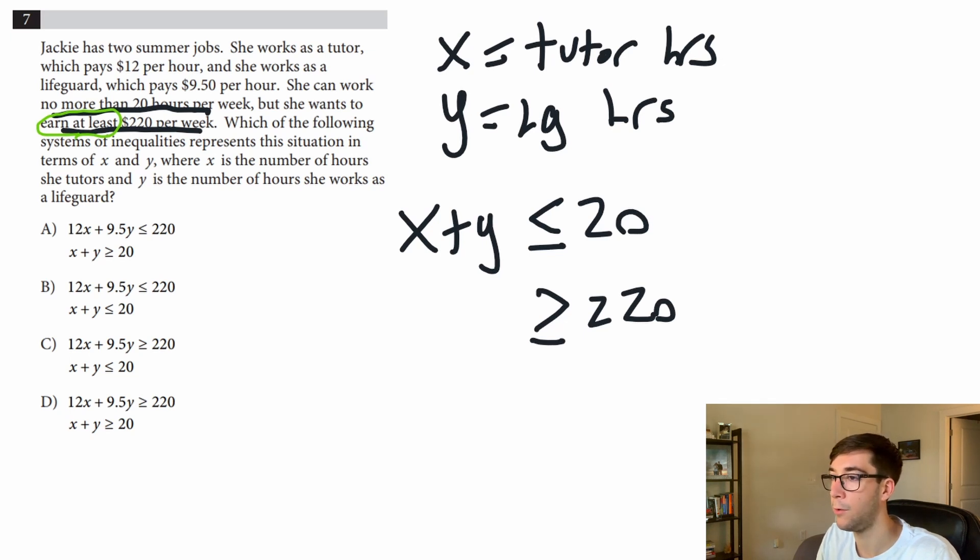The amount you make is equal to the hours you work times the rate. So tutoring, she makes $12 an hour, so it's going to be 12x plus, with lifeguarding she makes $9.50, 9.5y. So the money she makes with tutoring and the money she makes with lifeguarding is going to be equal to or more than $220. So our answer here is going to be C.